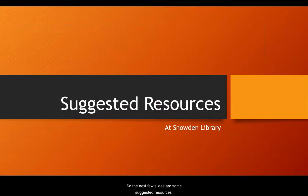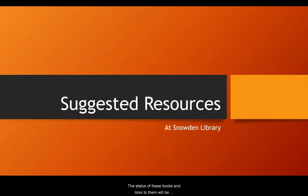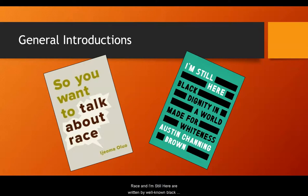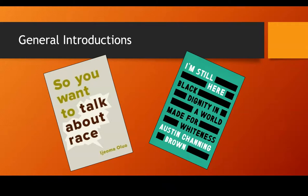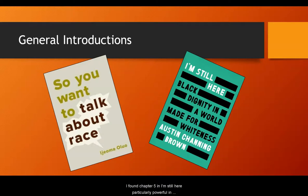The next few slides offer some suggested resources. I have read many of these and some are available at the Snowden Library as ebooks or print books; others we are in the process of ordering. Links and status will be available beneath this video. The books So You Want to Talk About Race and I'm Still Here are written by well-known Black female authors who write on difficult race topics in a way that is easy to digest — more like reading a novel than nonfiction. I found chapter five of I'm Still Here particularly powerful, where she talks about what it's like to be the only Black employee in an otherwise white office, and how oppressive and draining the constant microaggressions are.